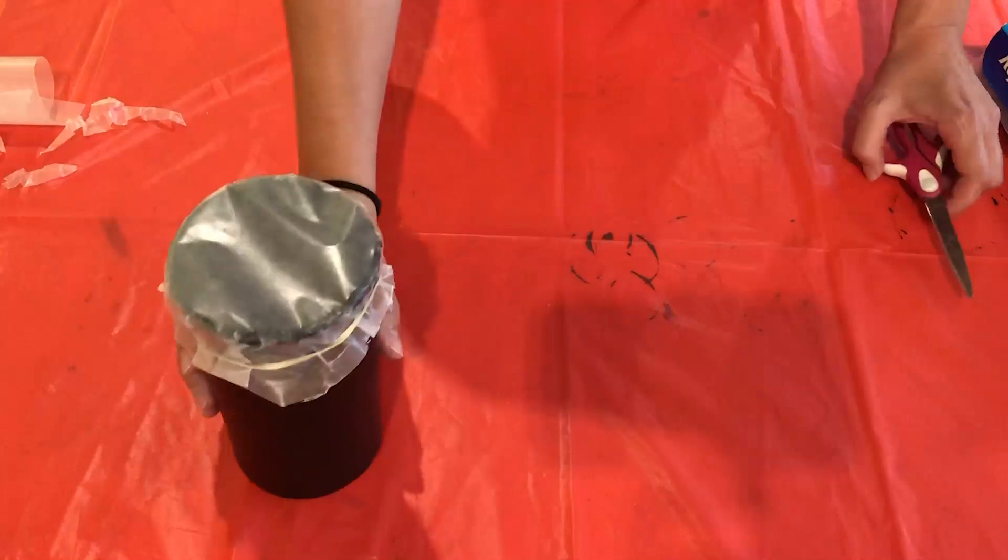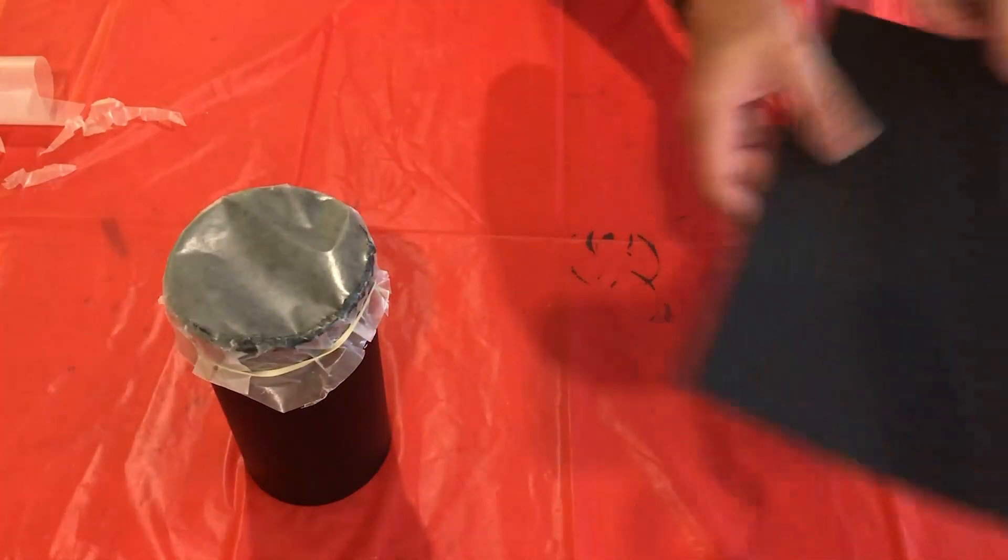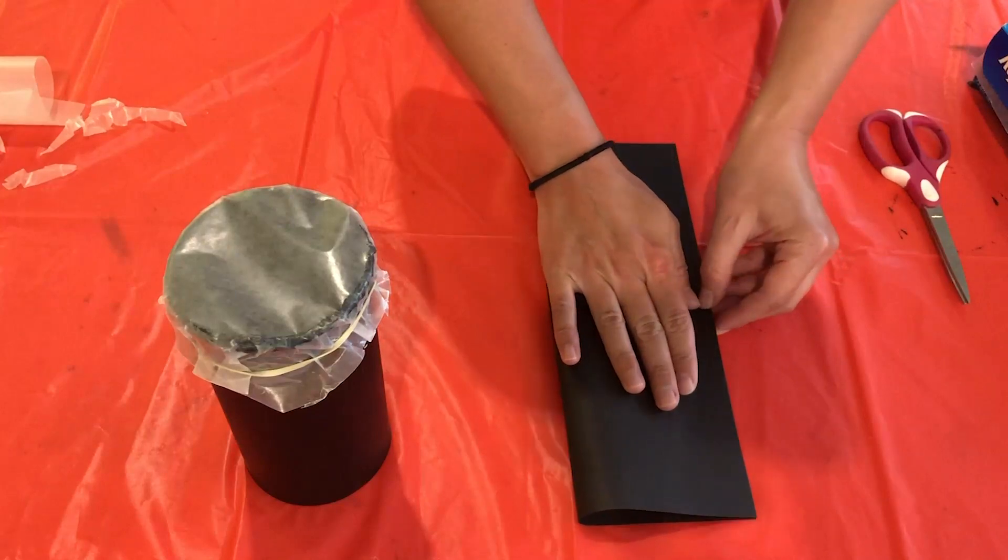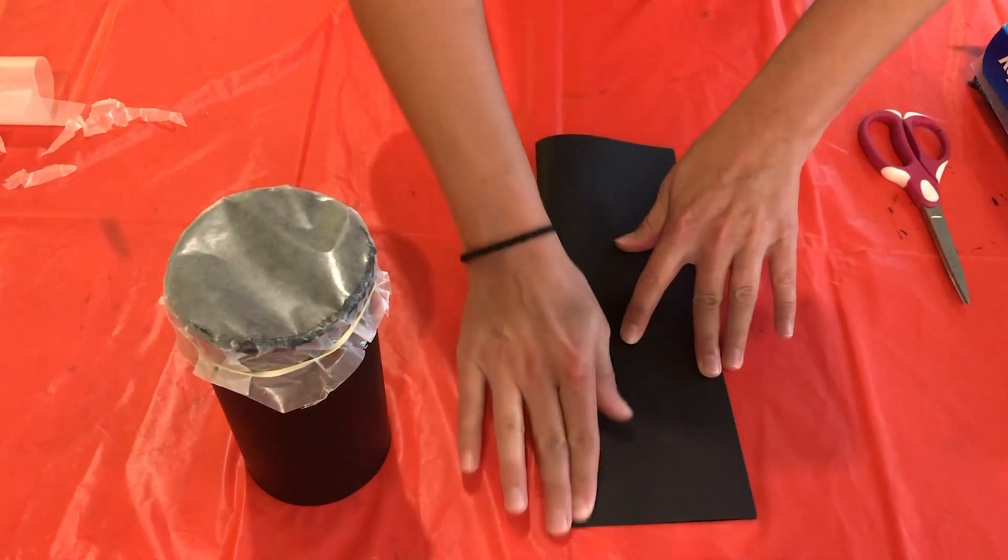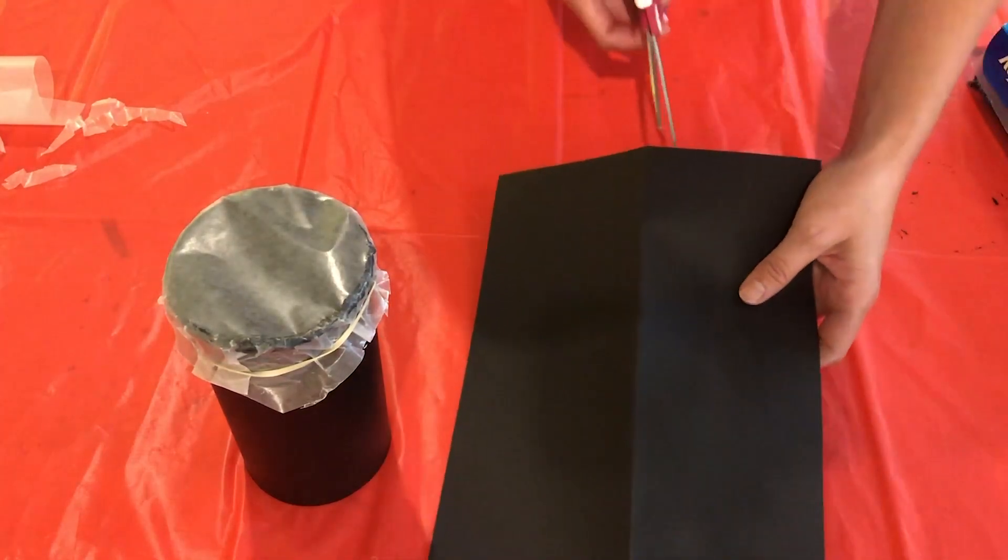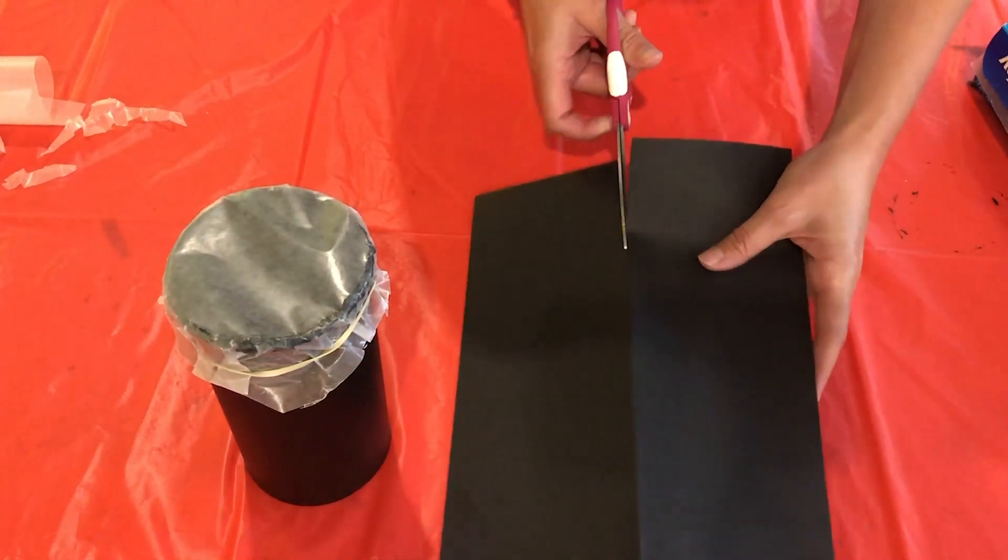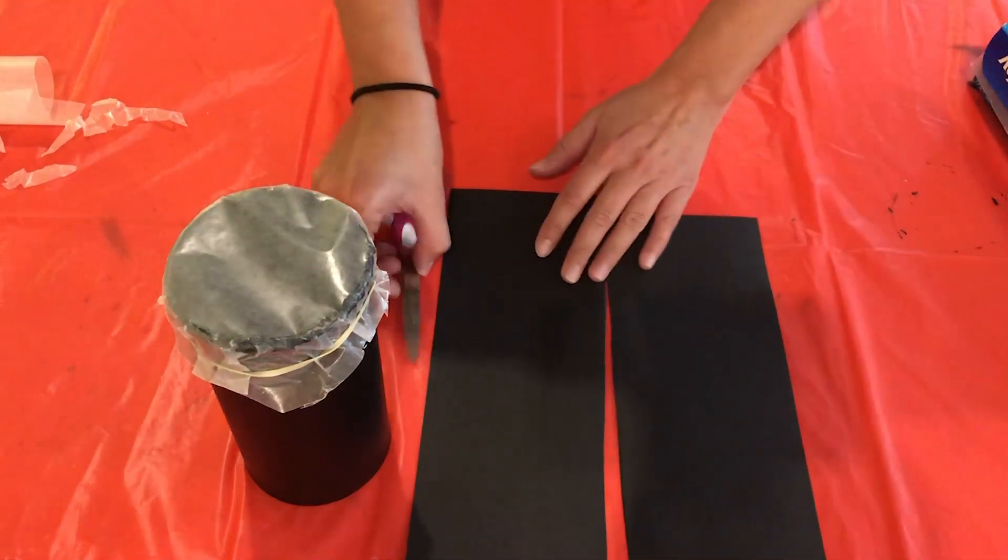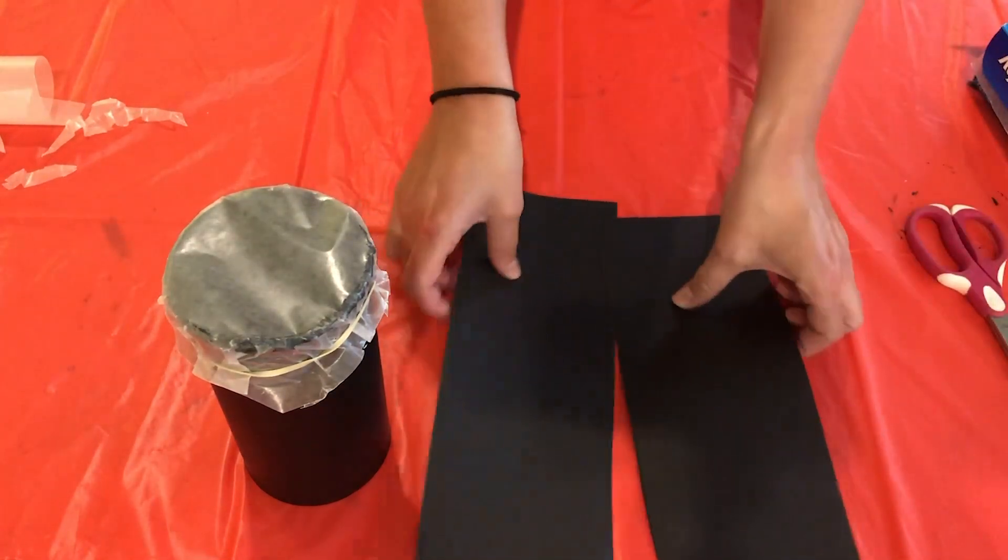Okay, so next we're going to move this over here. We're going to take our black paper and we are going to fold it over like this, hot dog style.